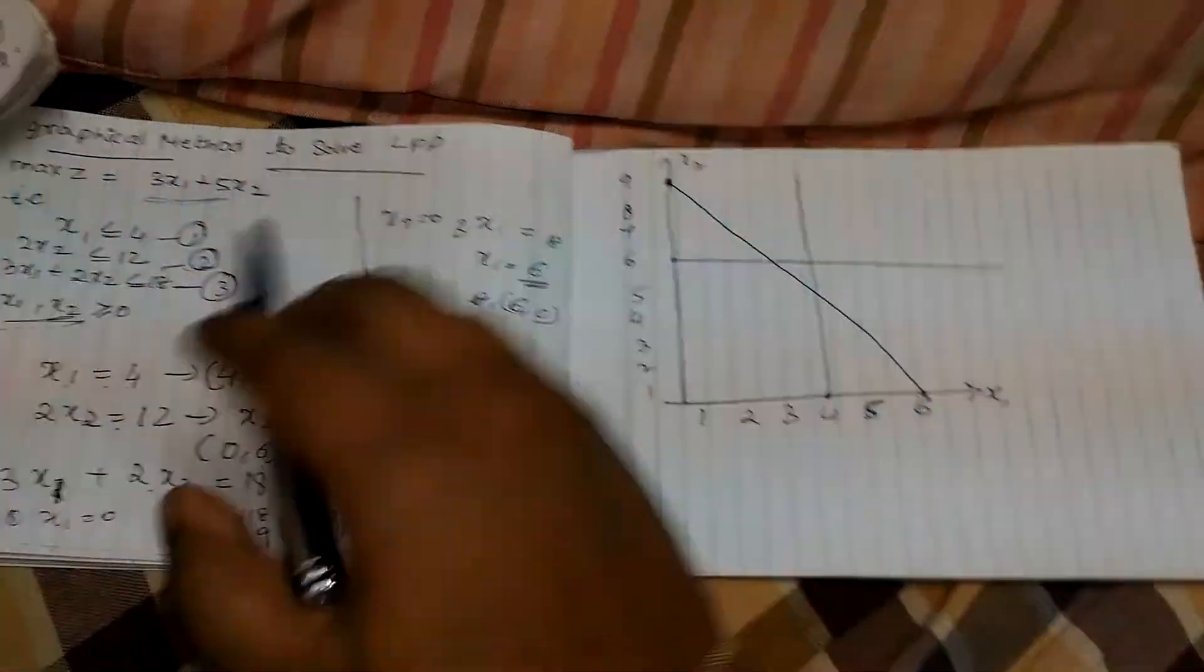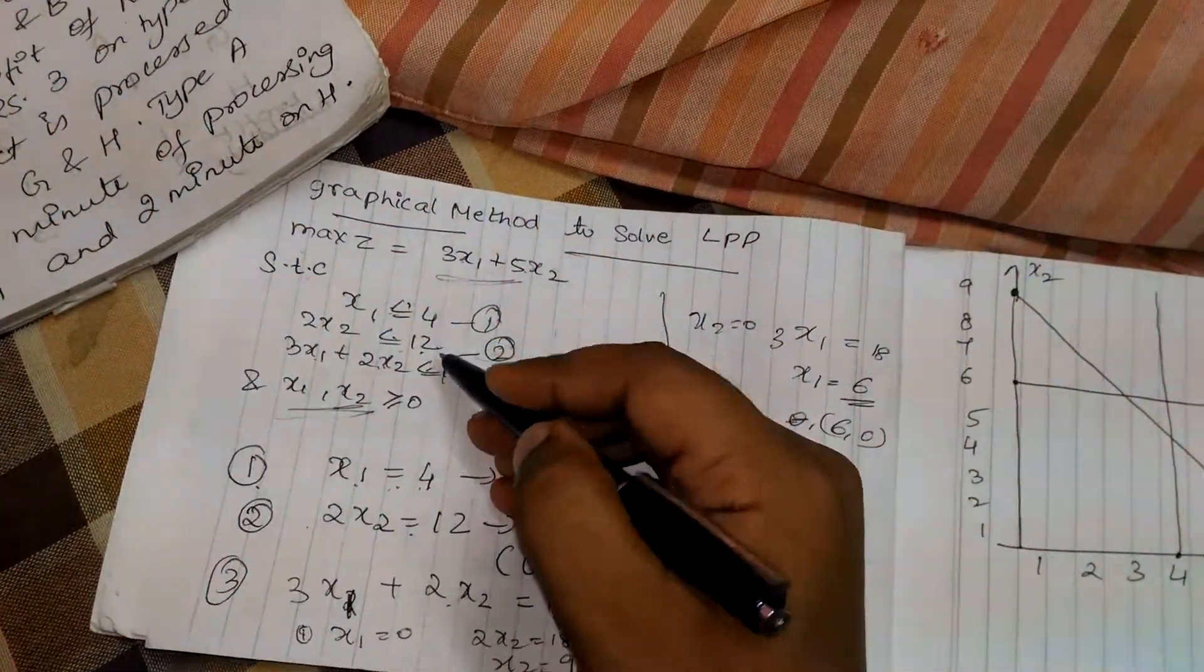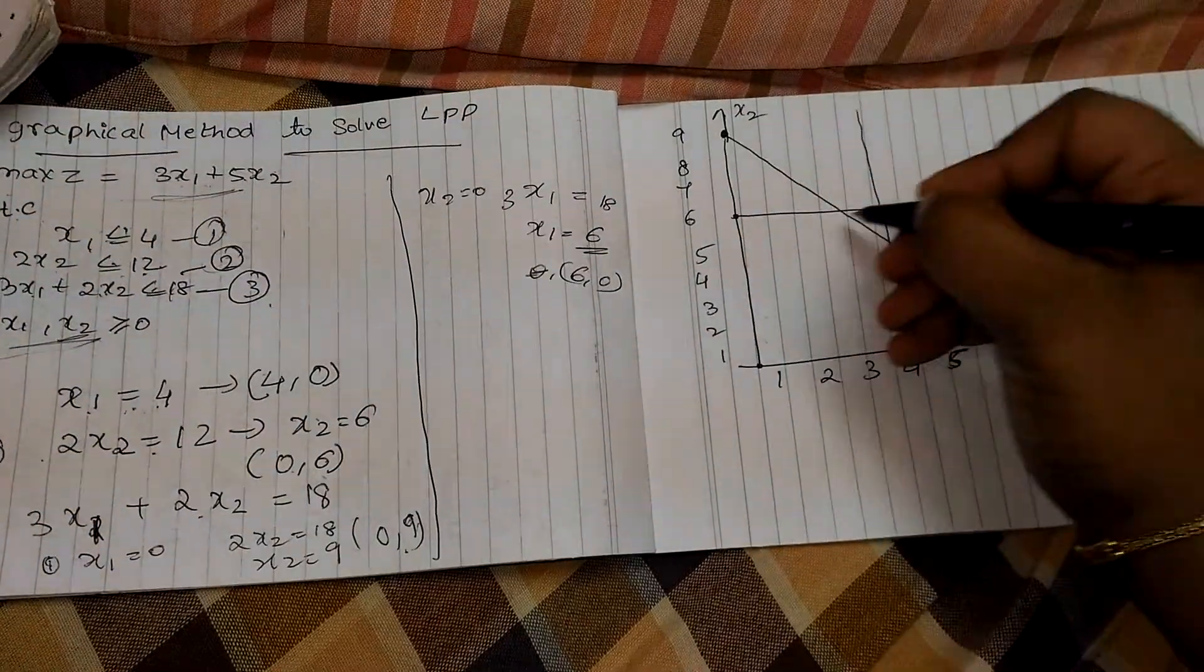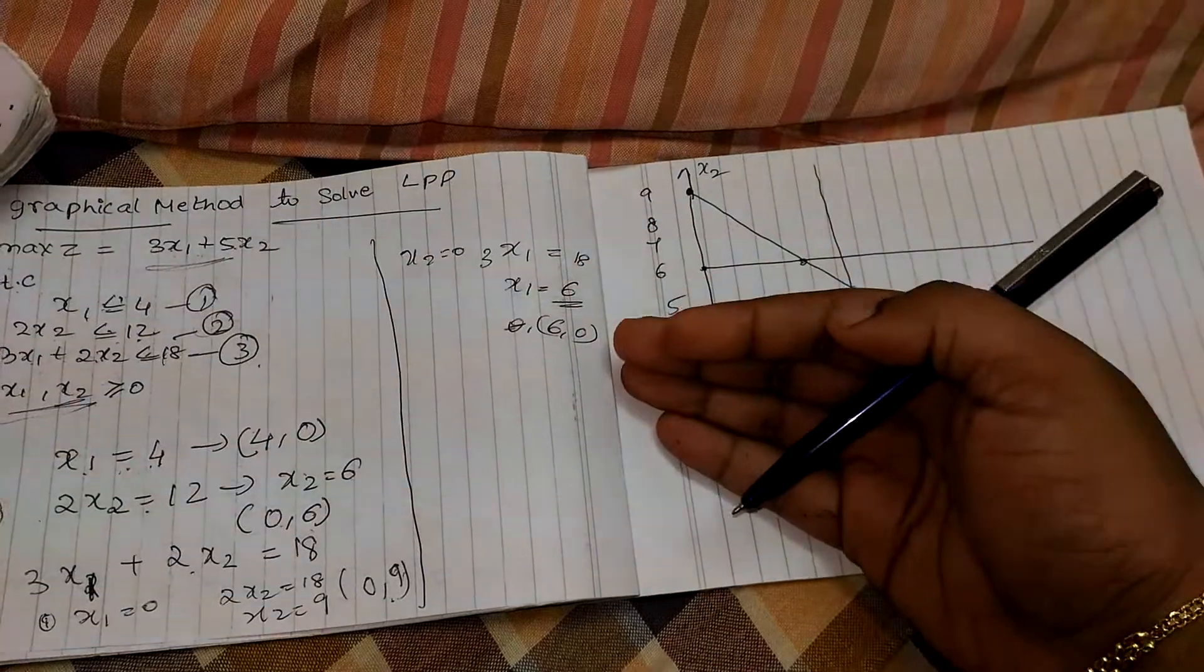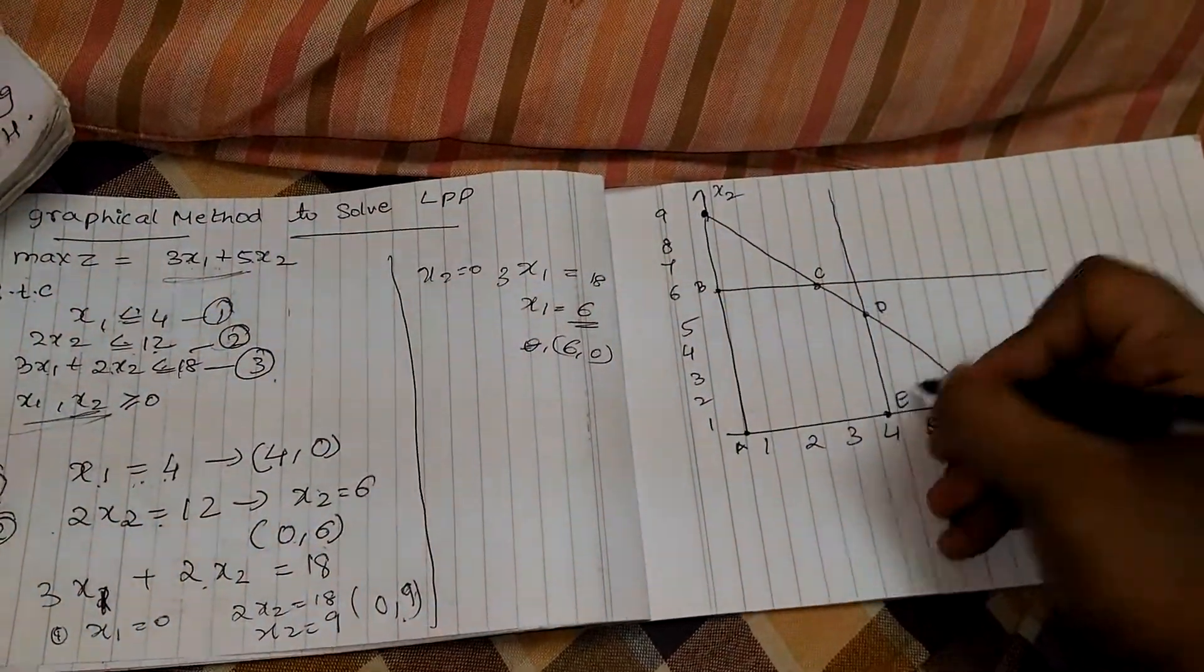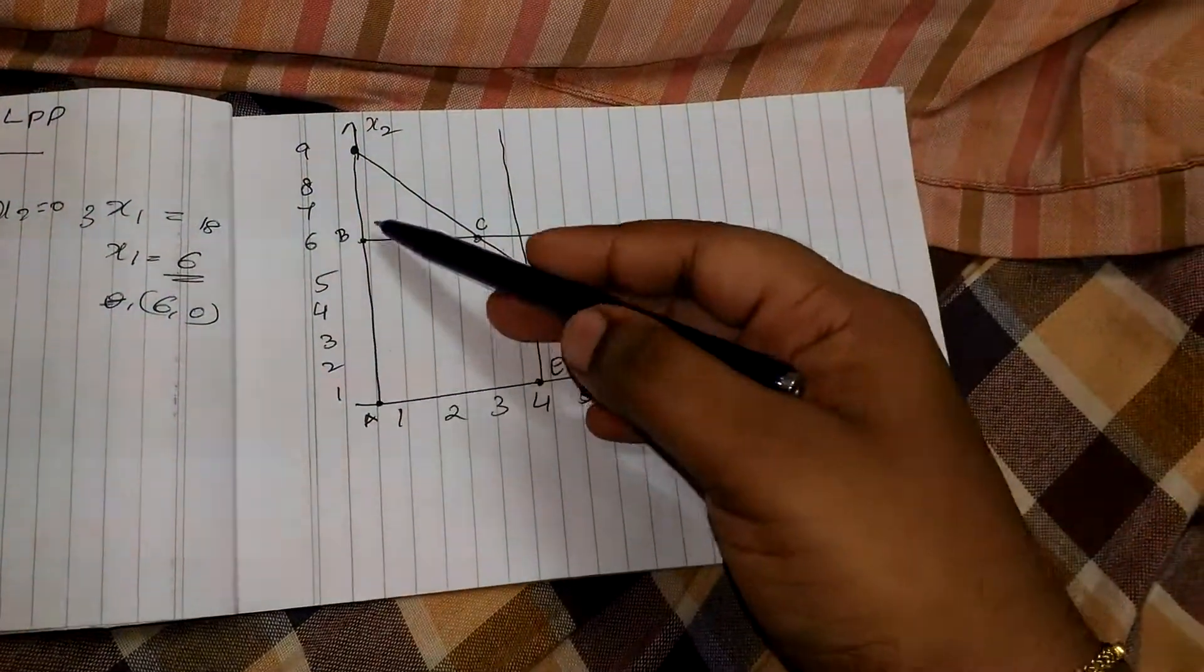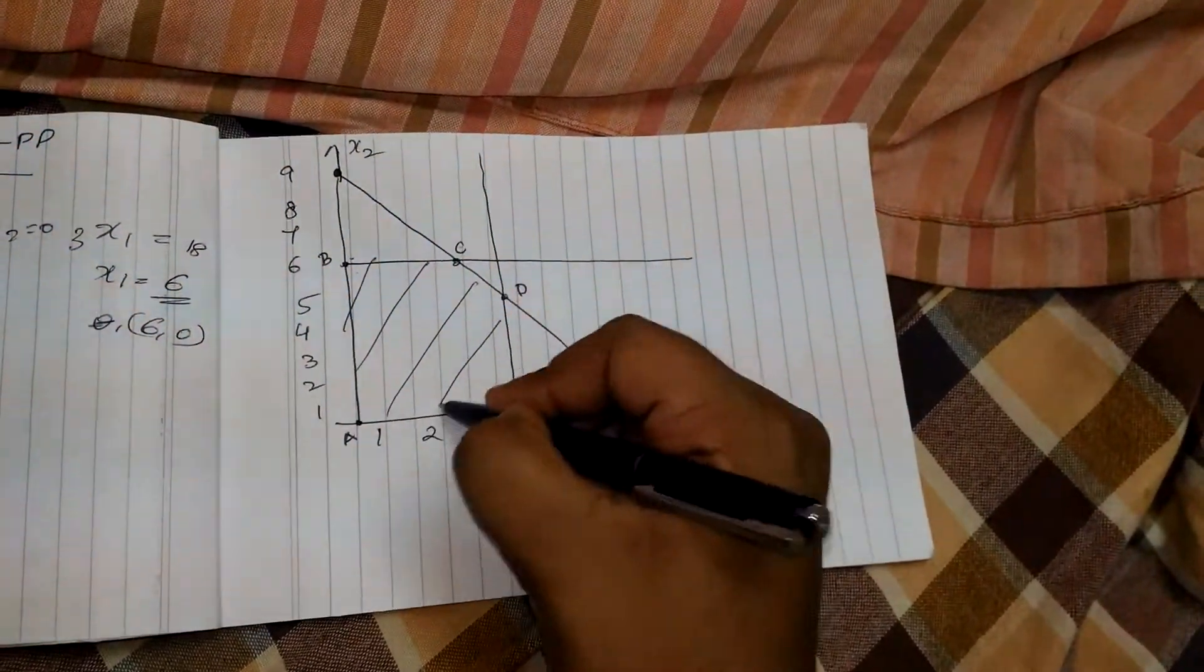Now, as it is maximization and all these symbols are less than equal to, we need to share the region lesser than these points. So, we take this, this, this, and this point, which is less than, towards the origin. Here we mark it as A, this is B, C, D, and E. Now, we need to find the x and y axis values of these points, which we are marked. This will be the feasible region.